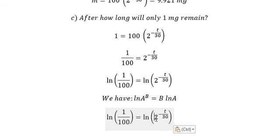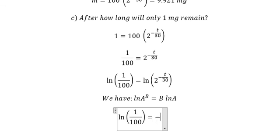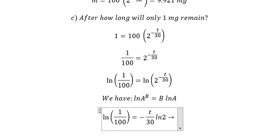So a is number 2, b is negative small t over 30. We need to transform this one into this one, and now we can find the value of t here.